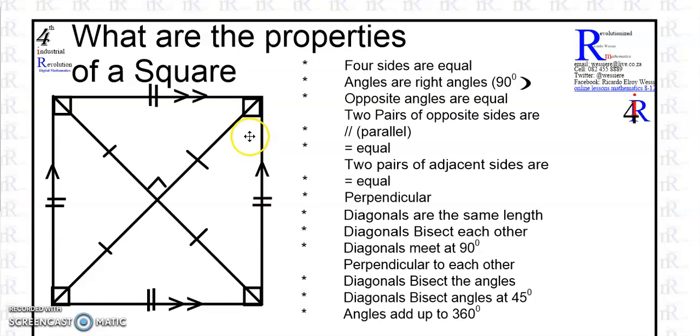And the angles, this one, that one, that one and that one, add up to 360 degrees. So let's quickly count. So here we can identify that there are 13 properties of a square and maybe we only knew two.